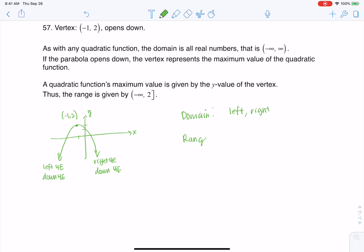And for range, we always want to go down, comma, up, or low to high. That's a general way of saying it, so you always want to go low to high when you're doing your intervals.